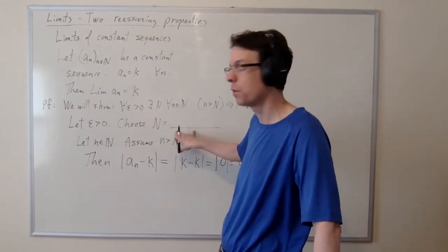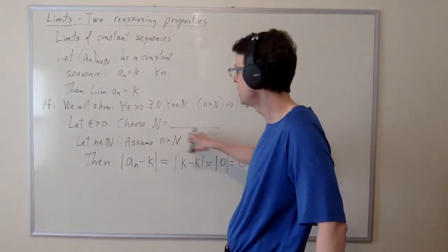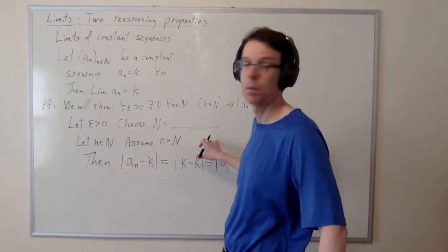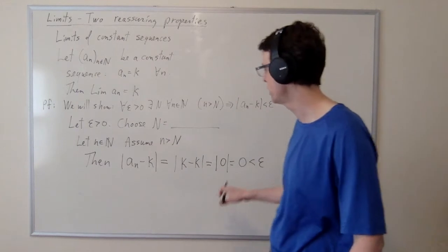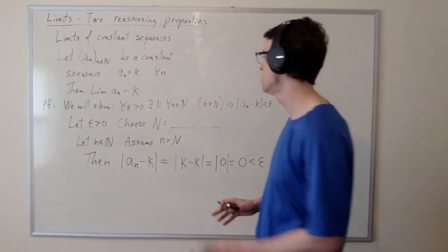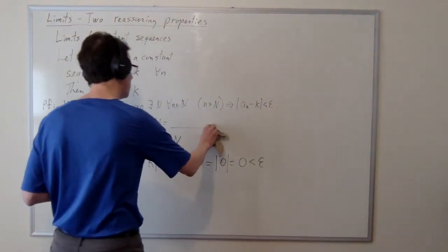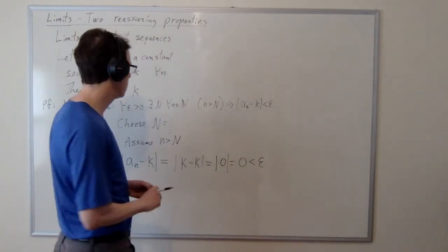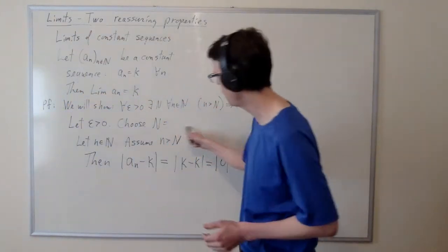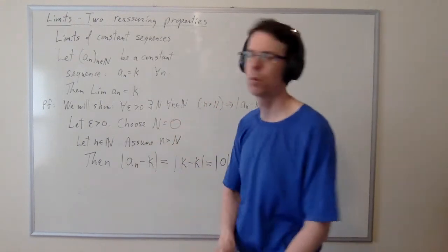Otherwise, it doesn't even make sense. But it doesn't matter what you put, because you don't even need to use this assumption that little n is greater than cap N in order to get the job done. So what should we put? Well, it depends whether you want to be fun and cute or whether you want to just be simple. If you want to be fun and cute, you can put your favorite number here. If you want to be simple, put N equals zero.